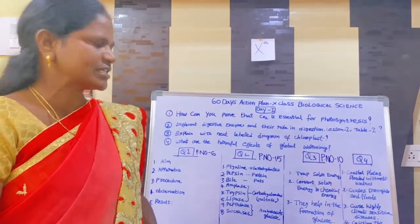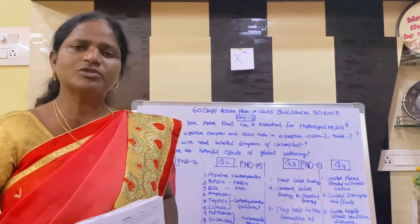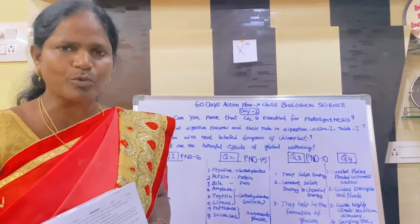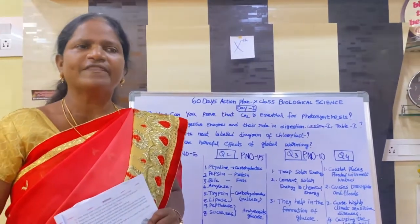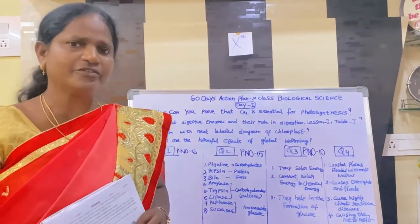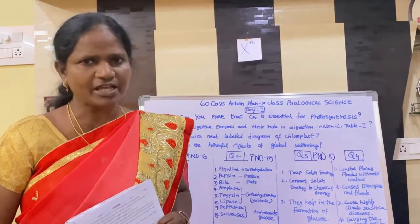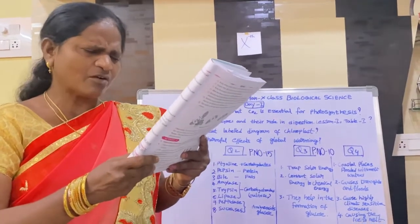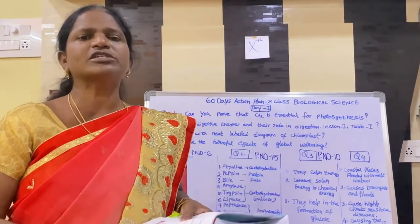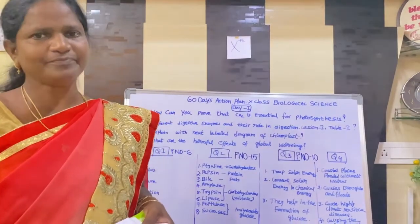So you must write all the apparatus. In the procedure, KOH pellets or KOH solution is very important — it absorbs the CO2 in the bottle; that is the main point. In the observation, the leaf outside the bottle turns blue-black because starch is prepared in that part. Inside the bottle, there is no preparation of starch, so the blue-black color is not seen there. All factors — water, sunlight, and chlorophyll — are available to the plant, but CO2 is not available inside the bottle, so blue-black color is not seen on that part of the leaf. The result is the same as the aim.